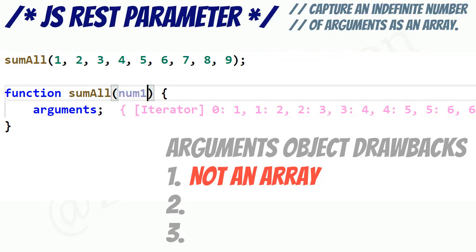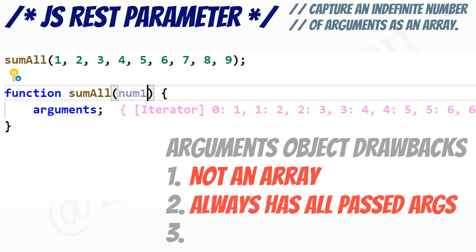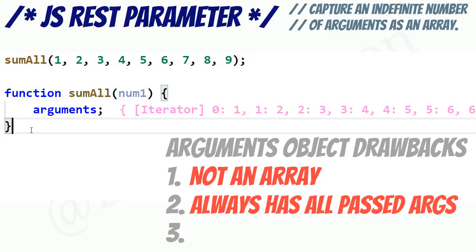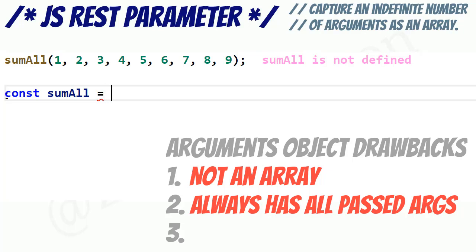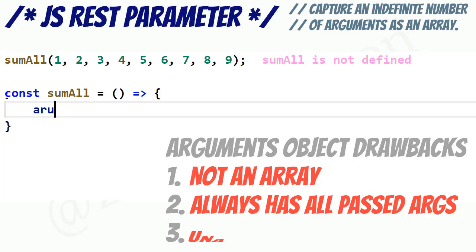Number two, it always contains all past argument values. You have no control over which arguments end up in your collection. Number three, ES6 arrow functions don't have their own arguments object, so you can't use any old tricks there.